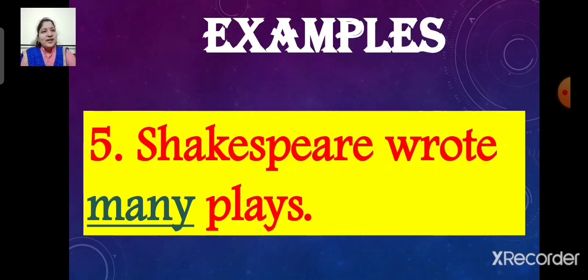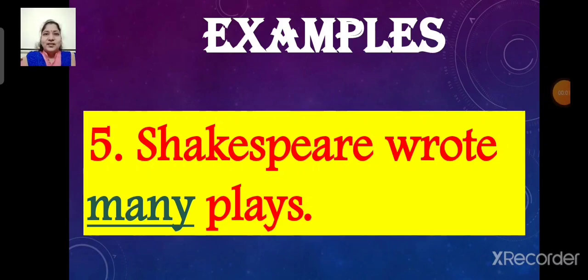Shakespeare wrote many plays. Here, the underlined word is many. So the word many is an adjective. It describes the noun plays. The word many tells us the number of plays written by Shakespeare. So the word many is an adjective of number.